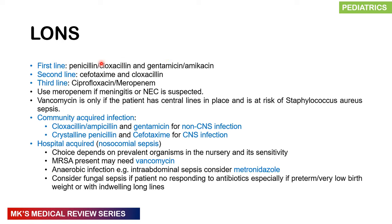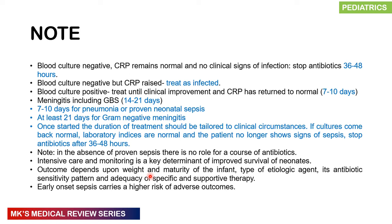For late onset neonatal sepsis: first line is penicillin or cloxacillin with gentamicin or amikacin; second line is cefotaxime and cloxacillin; third line is ciprofloxacin or meropenem (used if meningitis is present, though uncommon). Vancomycin is used only if the patient has a central line in place and is at risk of Staphylococcus aureus sepsis, particularly methicillin-resistant Staphylococcus aureus (MRSA). For community-acquired infection: cloxacillin or ampicillin with gentamicin for non-CNS infections; crystalline penicillin and cefotaxime for CNS infections. For nosocomial infection: vancomycin if MRSA is suspected; metronidazole or clindamycin for anaerobic infection. Consider fungal species if the patient is not responding to antibiotics, especially in preterm or very low birth weight infants with indwelling lines.